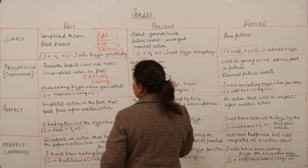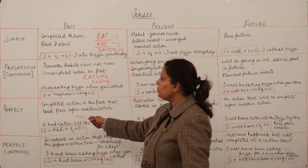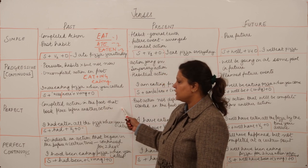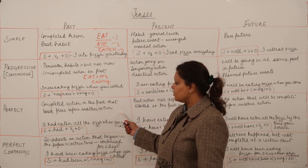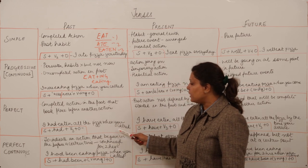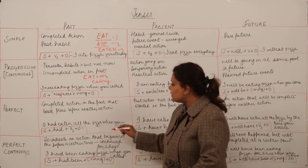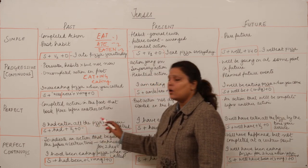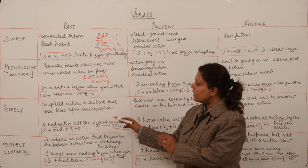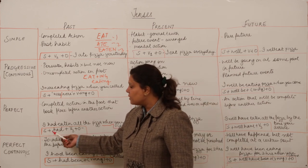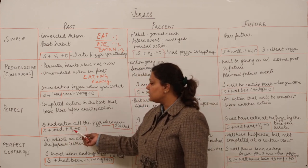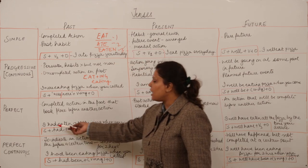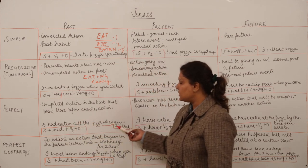Now we come to the third form — the perfect form. The past perfect is used for completed actions in the past that took place before another action. For example, 'I had eaten all the pizza when you called' — when he called, the pizza had already been eaten. The form is: subject + had + third form of the verb (eaten) + object.